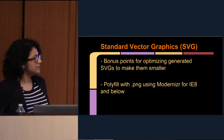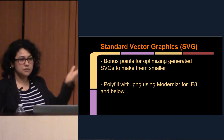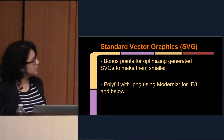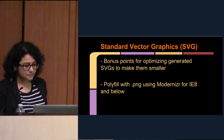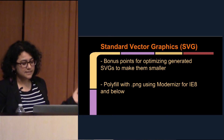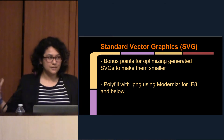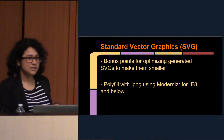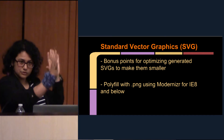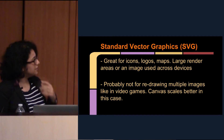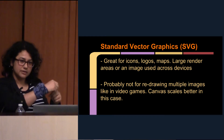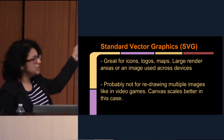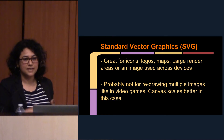IE8 does not support SVGs, but every other browser does. You can polyfill it using Modernizr and just replace the SVG with a PNG on IE8. SVGs are great for icons, logos, and maps — they scale really well for large images on your browser, like Google Maps. But if you're redrawing constantly because the SVG is being rendered in the browser, you don't want to use it in video games. You're better off using something like Canvas.